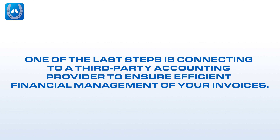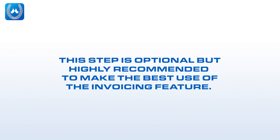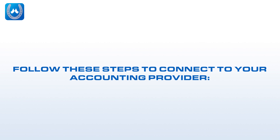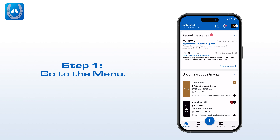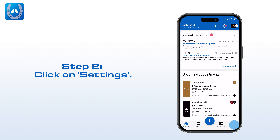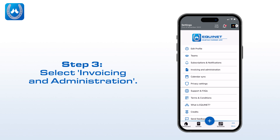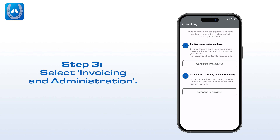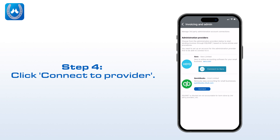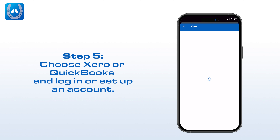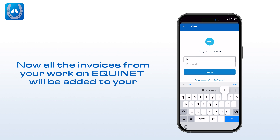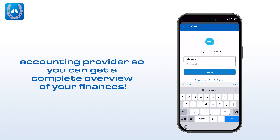One of the last steps is connecting to a third-party accounting provider to ensure efficient financial management of your invoices. This step is optional, but highly recommended to make the best use of the invoicing feature. Step 1: Go to the menu. Step 2: Click on Settings. Step 3: Select Invoicing and Administration. Step 4: Click Connect to Provider. Step 5: Choose Xero or QuickBooks and log in or set up an account. Now all the invoices from your work on Equinet will be added to your accounting provider, so you can get a complete overview of your finances.